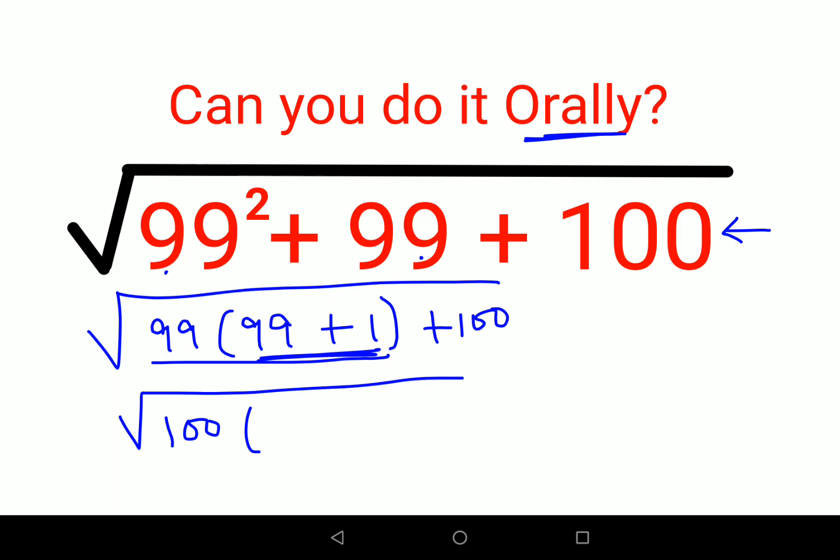So out of these two, the entire bracket has been taken common, so I'm just left with what? Again, 99. Plus, this 100 is taken out, so you are just left with what? 1.